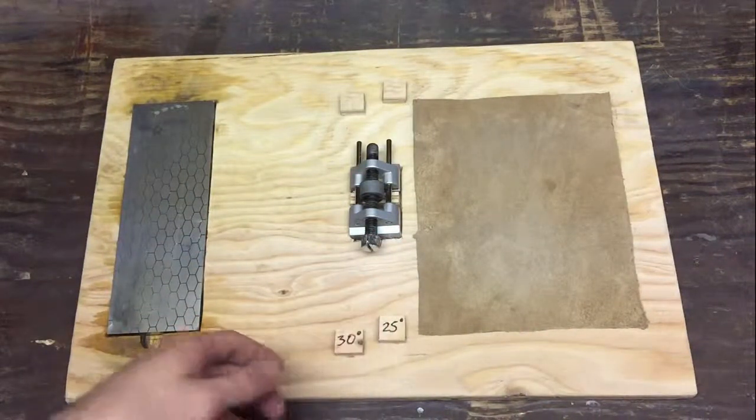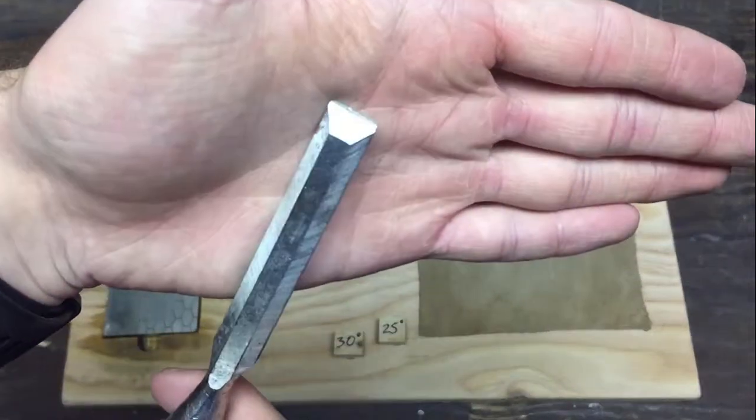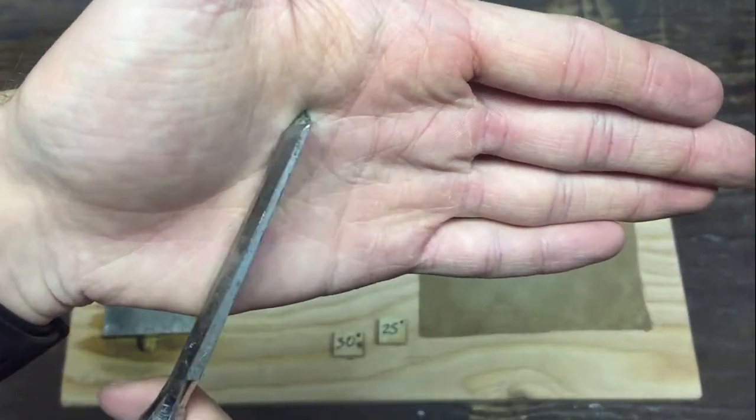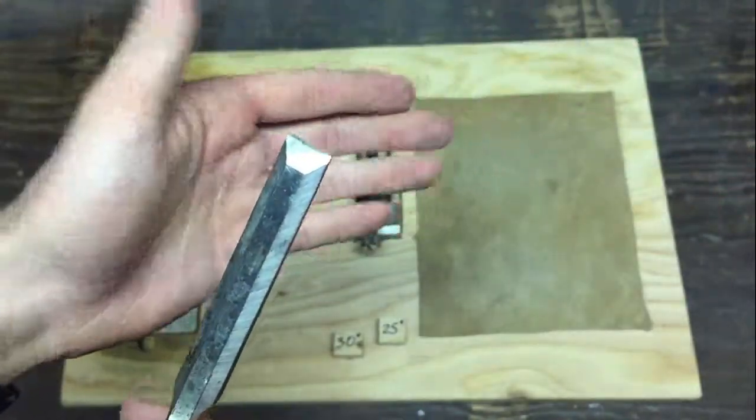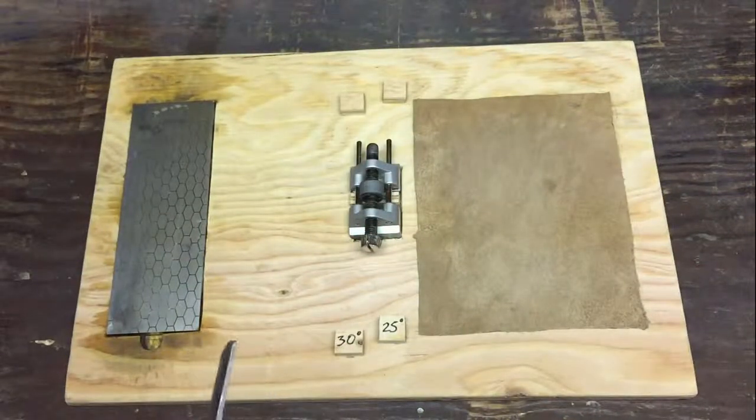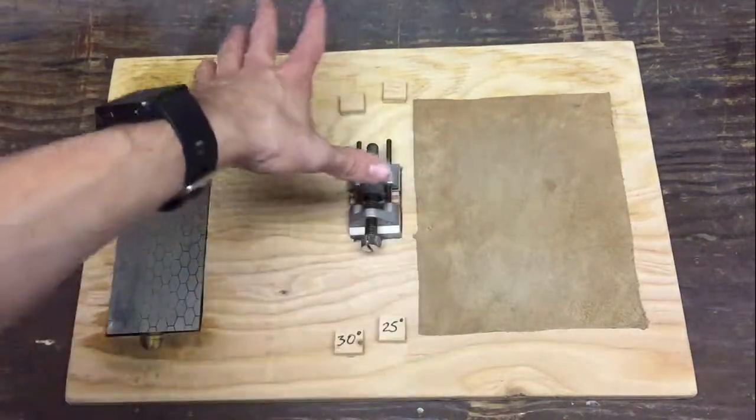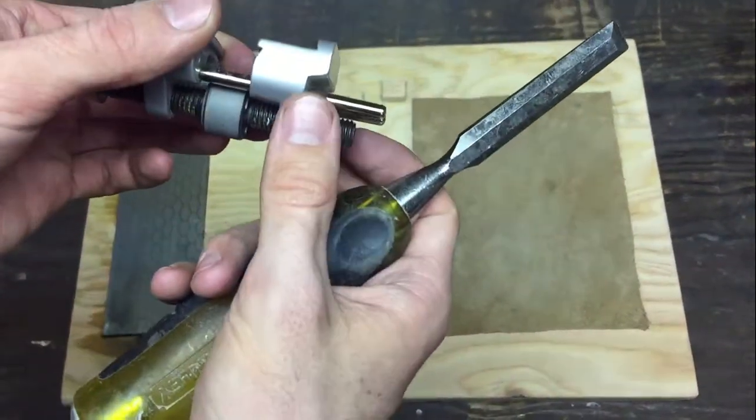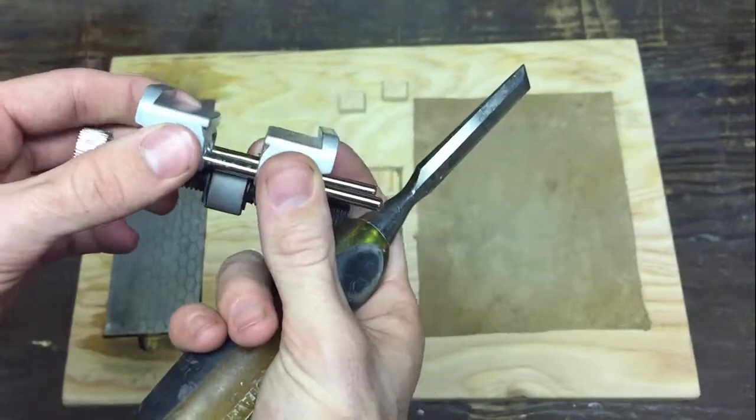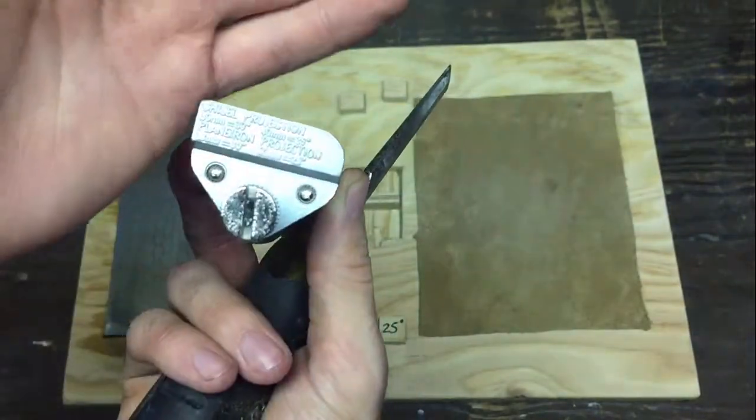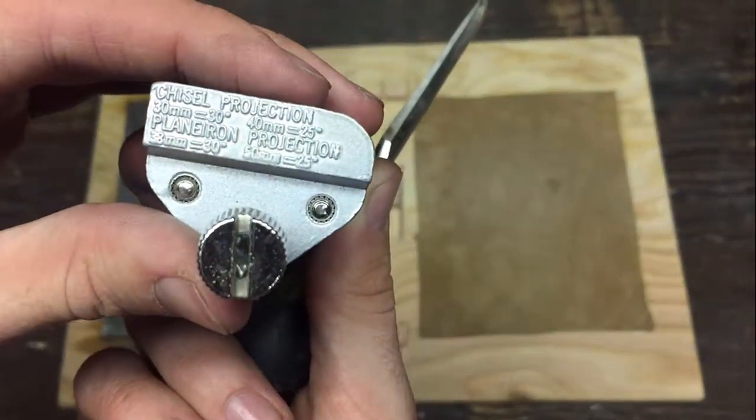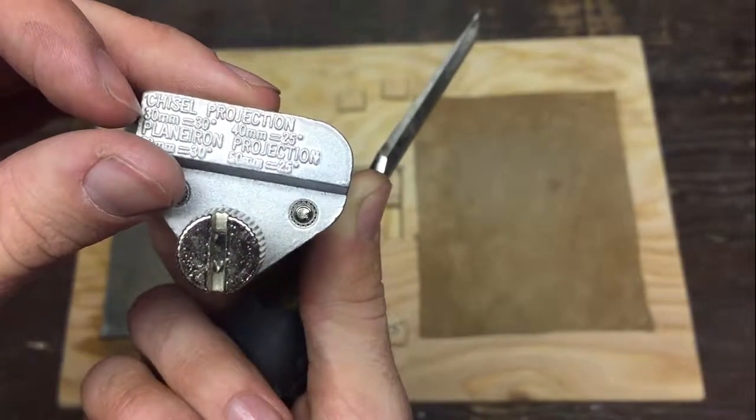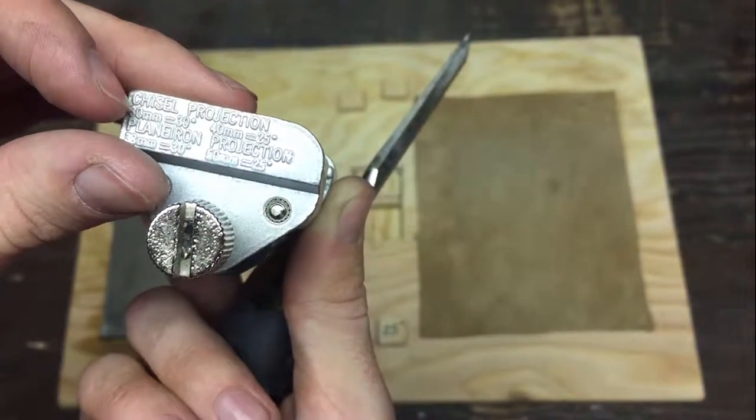And I'm going to use my honing guide and I'm going to show you how a honing guide works. So here on my honing guide, there's a couple of dimensions that I put as a stop block on my sharpening board. And those dimensions is going to give the angle that my chisel will have.